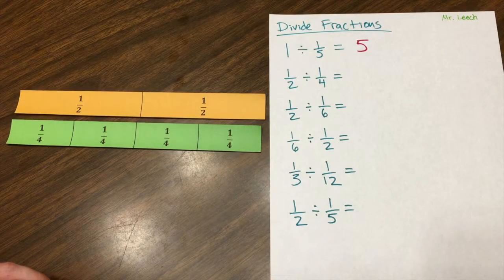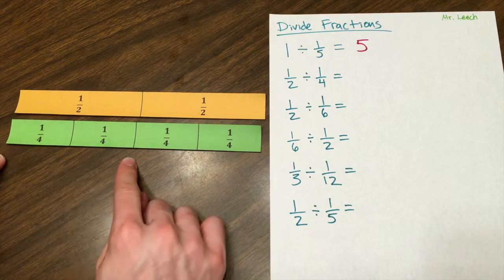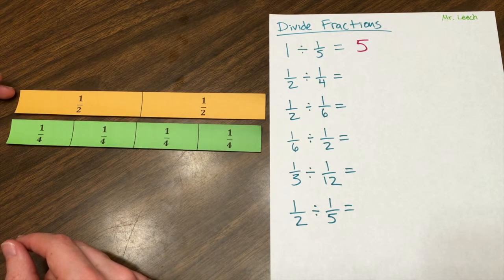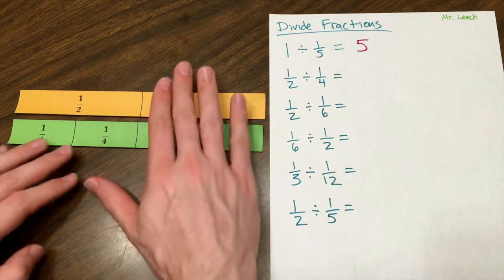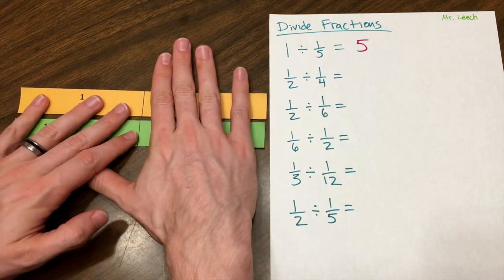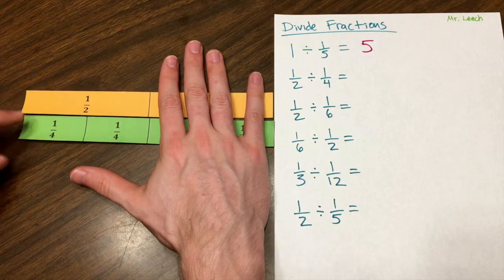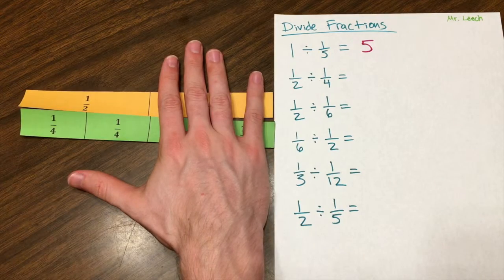What about one-half and one-fourth? How many times does one-fourth go into one-half? Or how many times can I divide one-half into fourths? Well let me just look at one of these halves, so we can cover up the others. So how many fourths goes into one-half? Well just two.